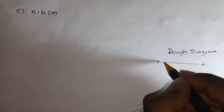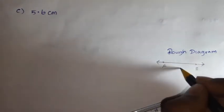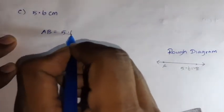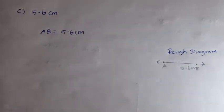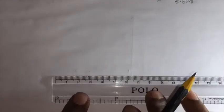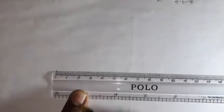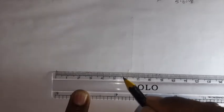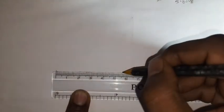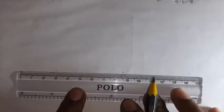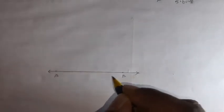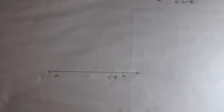Connect C and D. C and D connect. Measurement is 3.5. Check - 1, 2, 3, 3.5. So 3.5 centimeters. 3.5 centimeters correct.